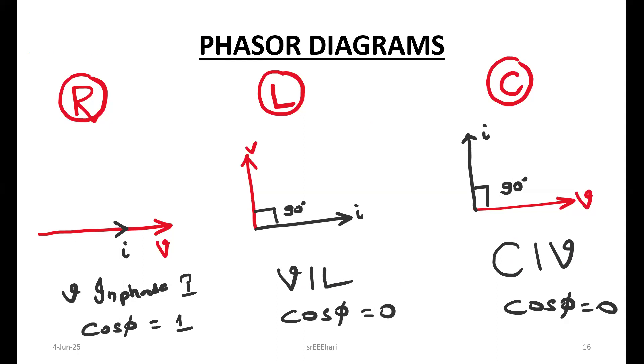These are the phasor representations. It's nothing but we want to make line segments. With the help of line segments, we want to use voltage and current relationships.